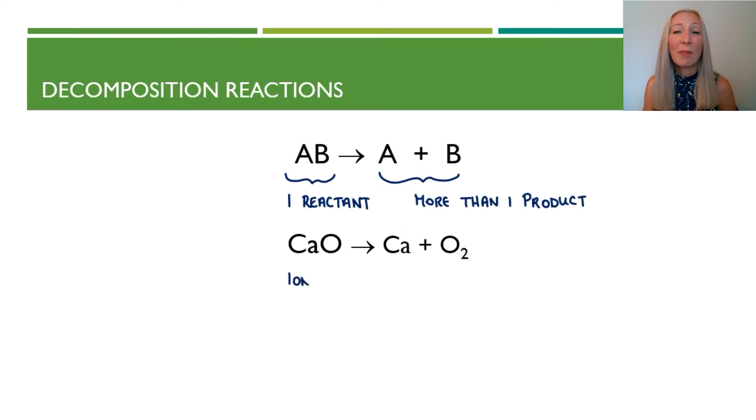Let's take a look at what happens when we decompose calcium oxide. We start with our reactant, which is calcium oxide. It's an ionic compound made of calcium ion and an oxide ion. And when we break it down, we get calcium as an element and oxygen as an element.